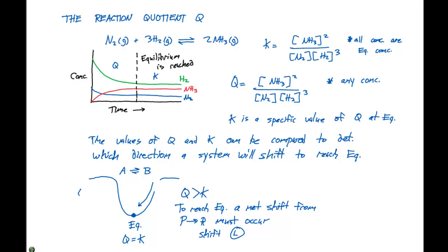If on the other hand, Q is less than K, we can say that to reach equilibrium, a shift from reactants to products must occur, or we're gonna shift to the right in order to reach equilibrium. So there's going to be a shift going this way.